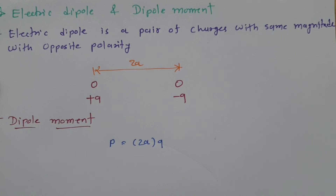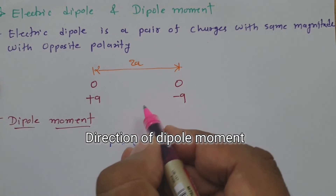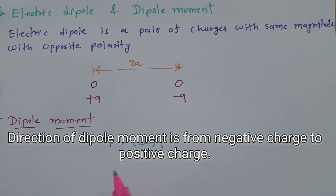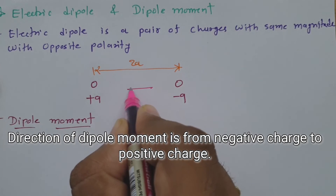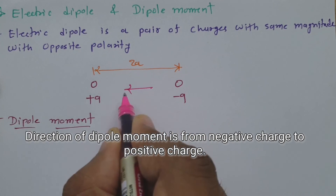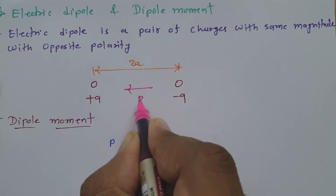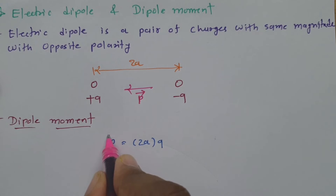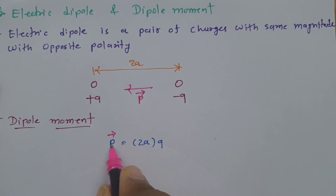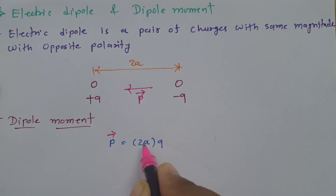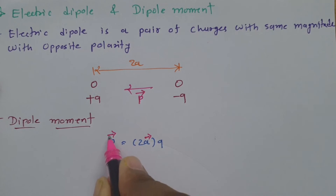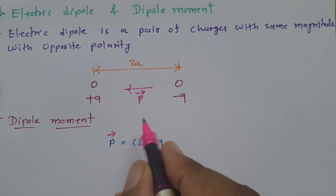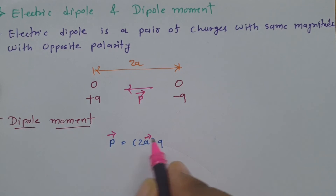Now we should know what is the direction of dipole moment. The direction of dipole moment is from the minus q charge to the plus q charge. So with direction, dipole moment is twice a into q, where twice a is the distance between the two charges and q is the magnitude of one charge.